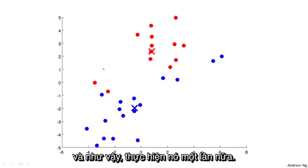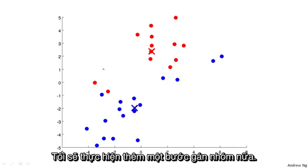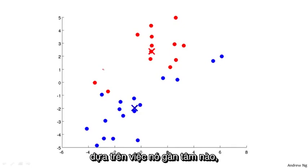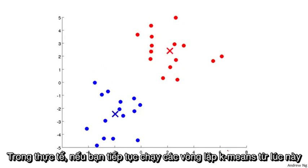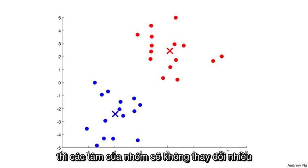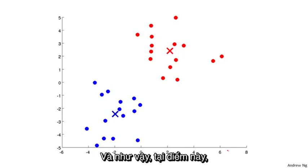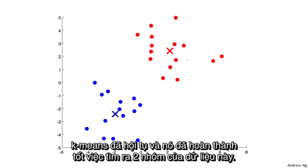We do one more cluster assignment step — coloring each point red or blue based on which centroid it's closer to — and then another move centroid step. And we're done. If you keep running additional iterations of k-means from here, the cluster centroids will not change any further and the colors of the points will not change any further. At this point, k-means has converged, and it's done a pretty good job finding the two clusters in this data.